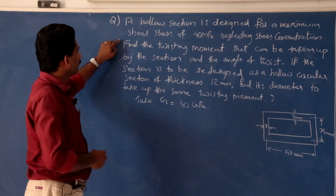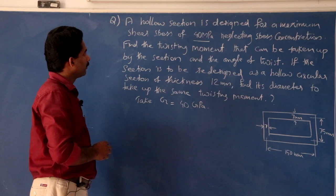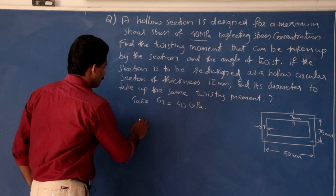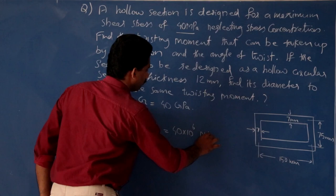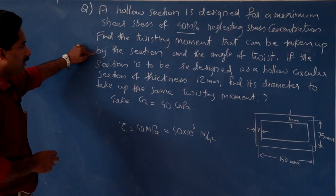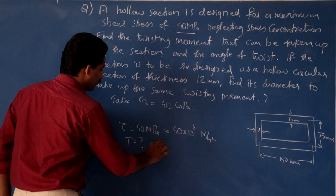For example, a hollow section is designed for a maximum shear stress of 40 MPa, neglecting the stress concentration. So, a design is given on the hollow section with a maximum shear stress of 40 MPa. So, tau is equal to 40 MPa, which means 40 into 10 raised to 6 Pa, or N per meter square. Find the twisting moment that can be taken up by the section and the angle of twist.